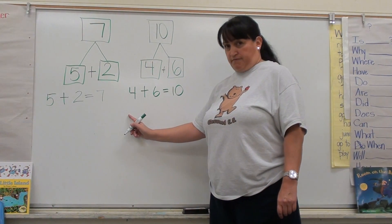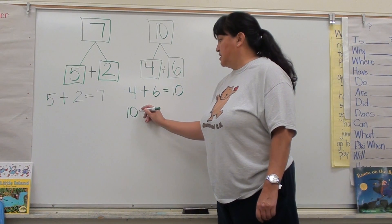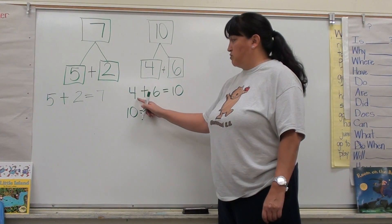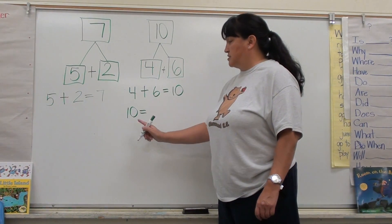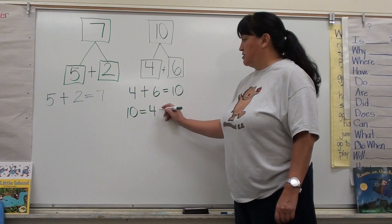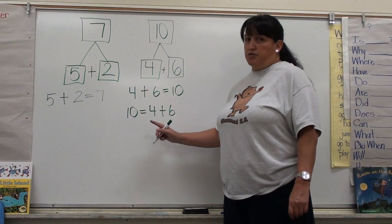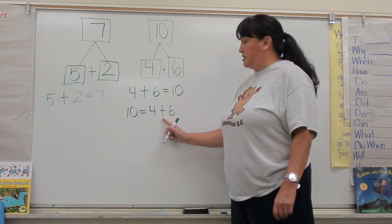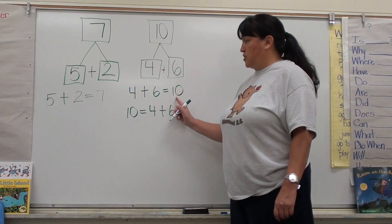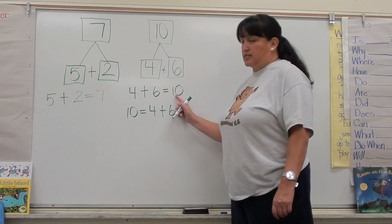There's another way to make number sentences — I can also write the whole number first: ten equals, and then I put my parts, four plus six. So ten equals four plus six. This gives us the same number sentence, but it puts the whole first instead of at the end.